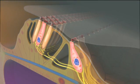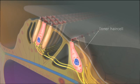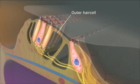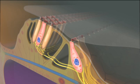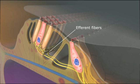There are two kinds of hair cells: inner and outer hair cells. 95% of the afferent fibers are from the inner hair cells. Outer hair cells receive mostly efferent input.